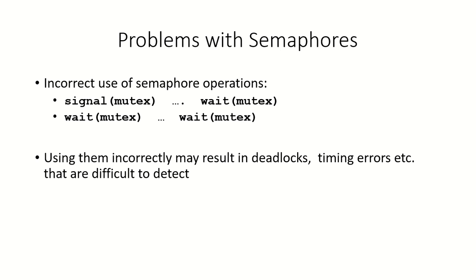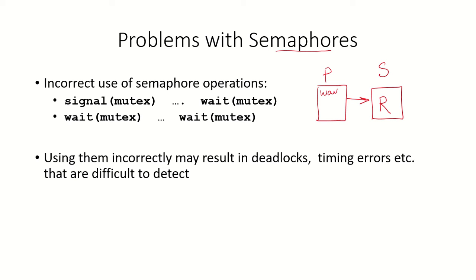In an earlier video, we have seen how semaphores can be used to ensure synchronization and mutual exclusion between processes. So suppose if we have a resource which is controlled by a semaphore S, and if any process wishes to access this resource and we want to ensure mutual exclusion, then this process will first wait on the semaphore, and then after using the resource, it will signal the semaphore so that any other process which wishes to use the resource can now use it.